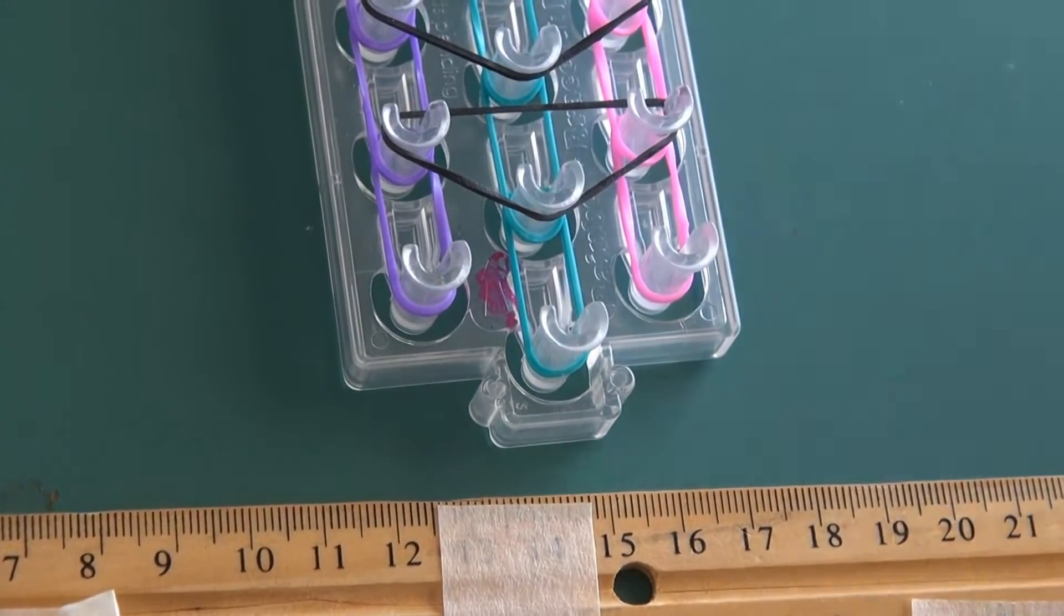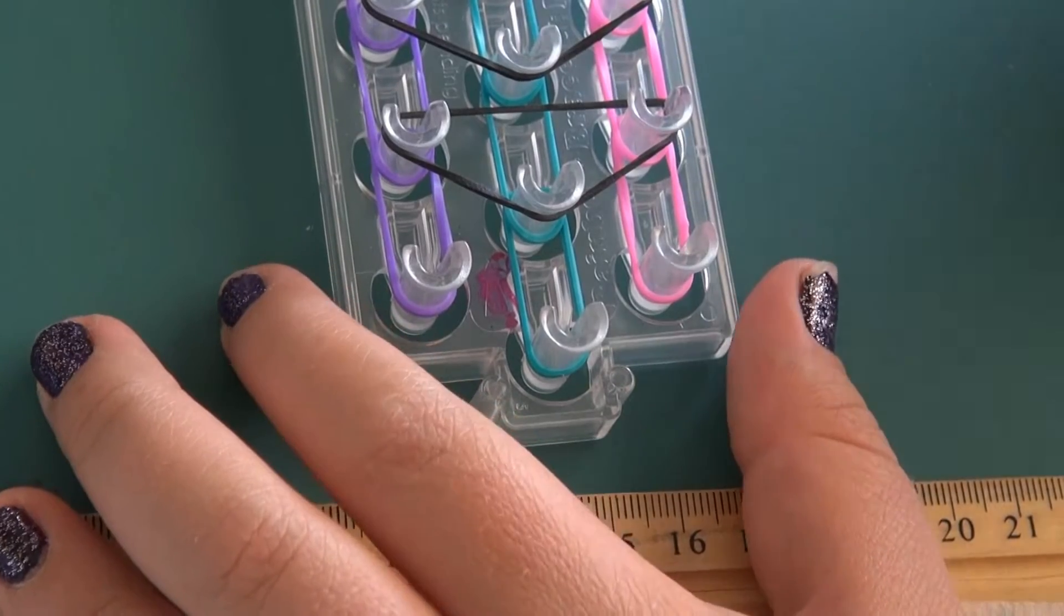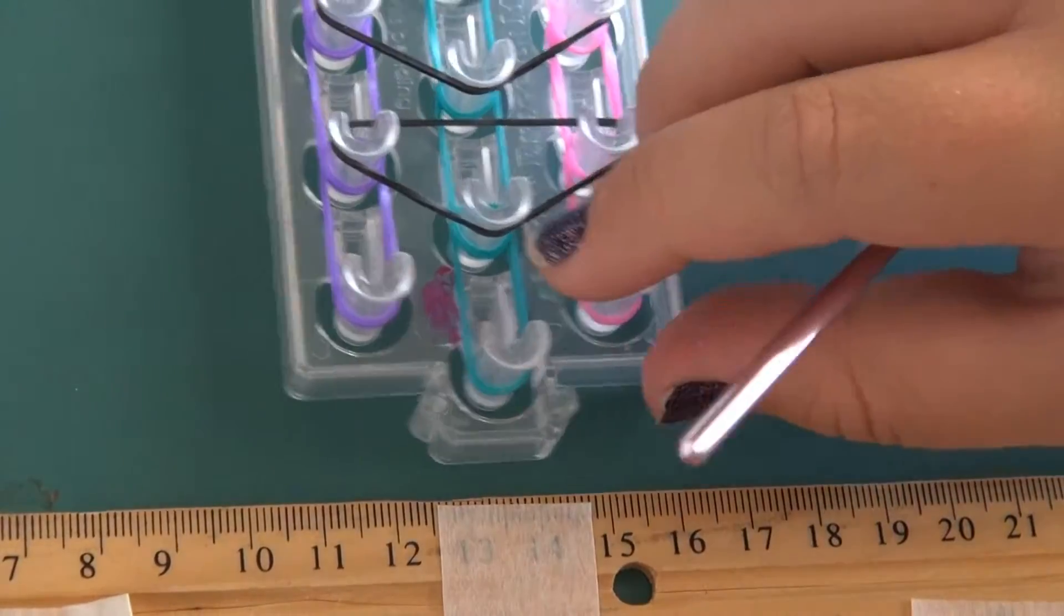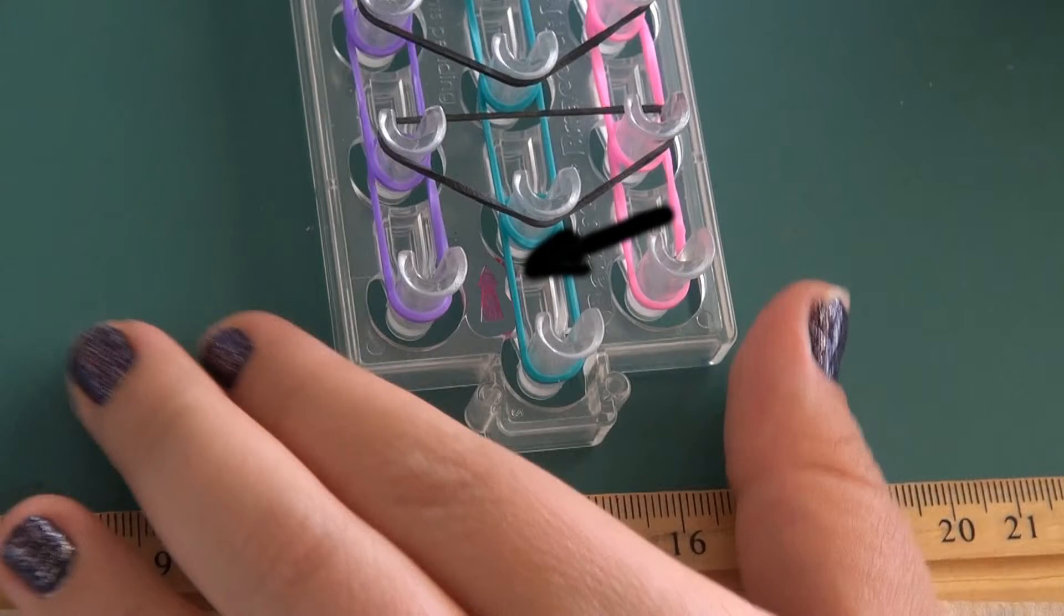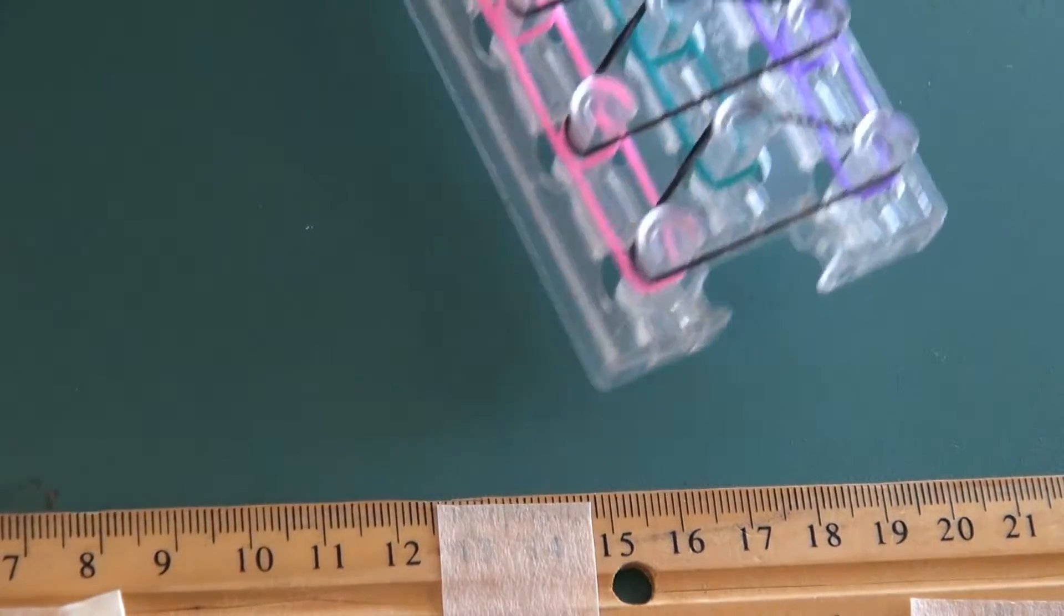Now that we have all our triangle bands on there, we will then turn the loom around so the arrow is facing towards us.